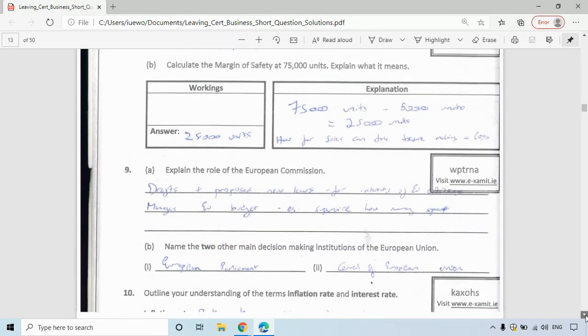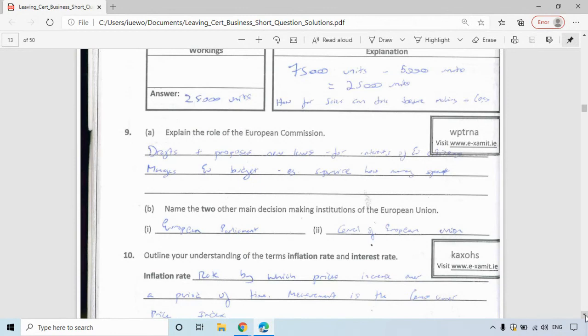Question nine, define the role of the European Commission. So it drafts and proposes new laws. This is Unit 7 for interested EU citizens. It manages the EU budget. In other words, supervising how money is spent. Two other main decision-making members or institutions of the EU: the European Parliament and Council of the European Union.